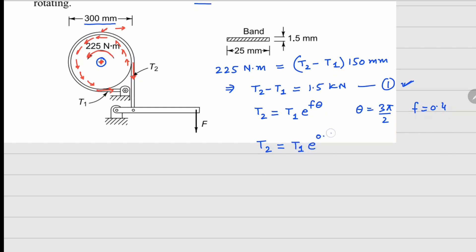We can solve these equations. T1 = 1.5 kN / (e^(0.6π) - 1), which gives T1 = 0.27 kN and T2 = 1.77 kN.